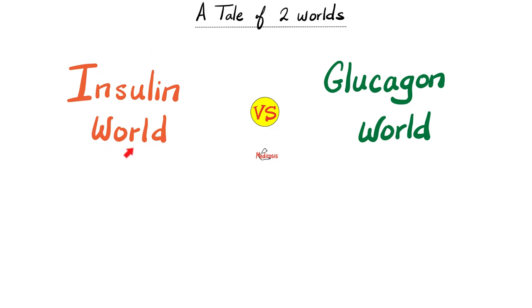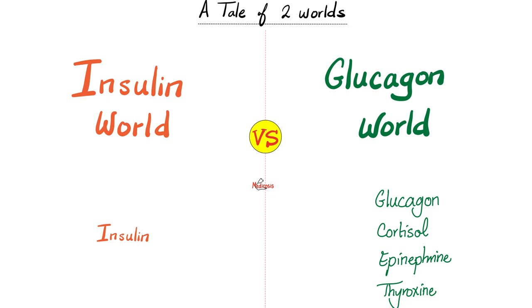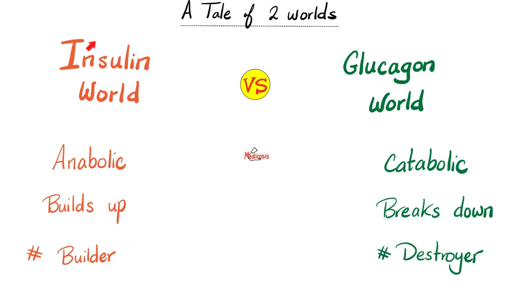This is the story of the insulin world — the feeding state. But glucagon belongs to the fasting state. Glucagon is the main one, but other friends follow: cortisol, epinephrine, and thyroxine. The heroic insulin stands alone against everybody. Insulin alone is anabolic — it builds up stuff. But glucagon and the rest, cortisol, epinephrine, thyroxine, are catabolic — they break down. They are destroyers.